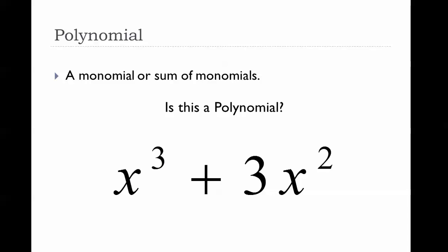Is this next expression a polynomial? Yes, it is. In fact, there are two monomials here — one is a variable to a whole number power, and the other is the product of a number and a variable with a whole number power. This is a polynomial, and because there are two pieces, it is called a binomial. Bi is the Greek root for two.